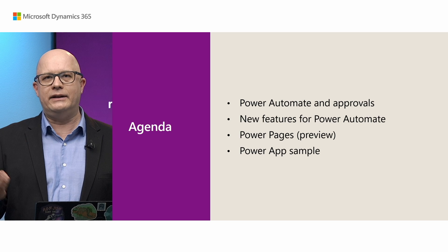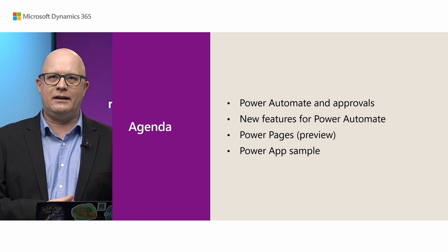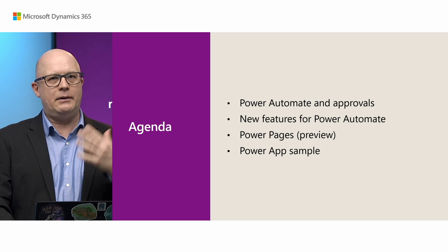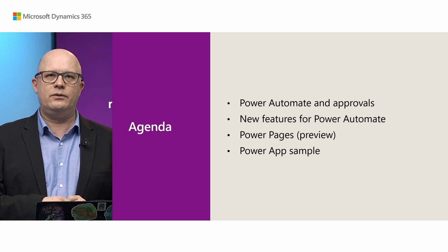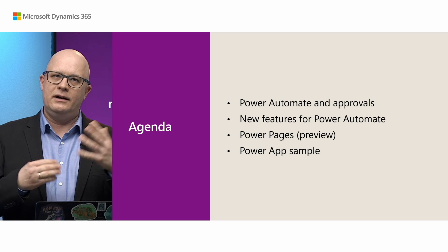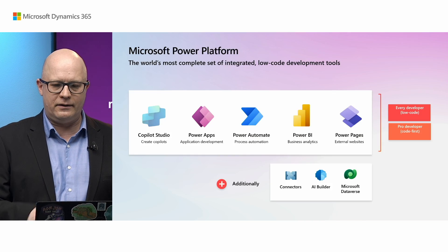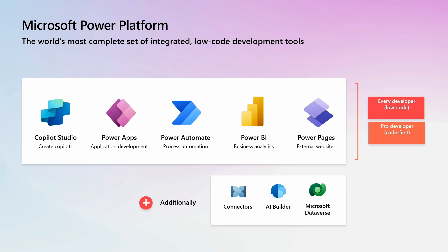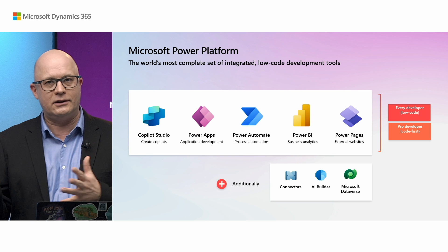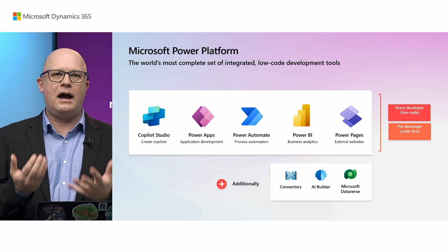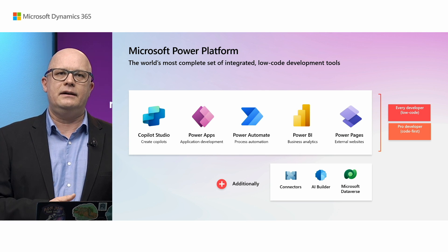Business Central is already well connected with Power Platform. We will talk about Power Automate, new features that we delivered this wave. We'll talk about Power Pages and a few other areas as well. Several tools are part of Power Platform, starting with Copilot Studio, Power Apps, Power Automate, Power BI, Power Pages, and several supporting technologies: Dataverse, AI Builder, and connectors.